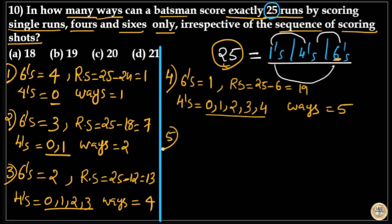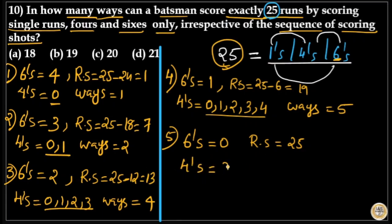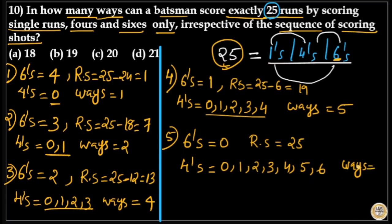In the fifth case, the number of sixes is 0. That means the remaining score is 25 itself. The number of fours can be 0, 1, 2, 3, 4, 5, or 6, because 6 fours are 24. That means the number of ways is equal to 6 plus 1, which is 7.